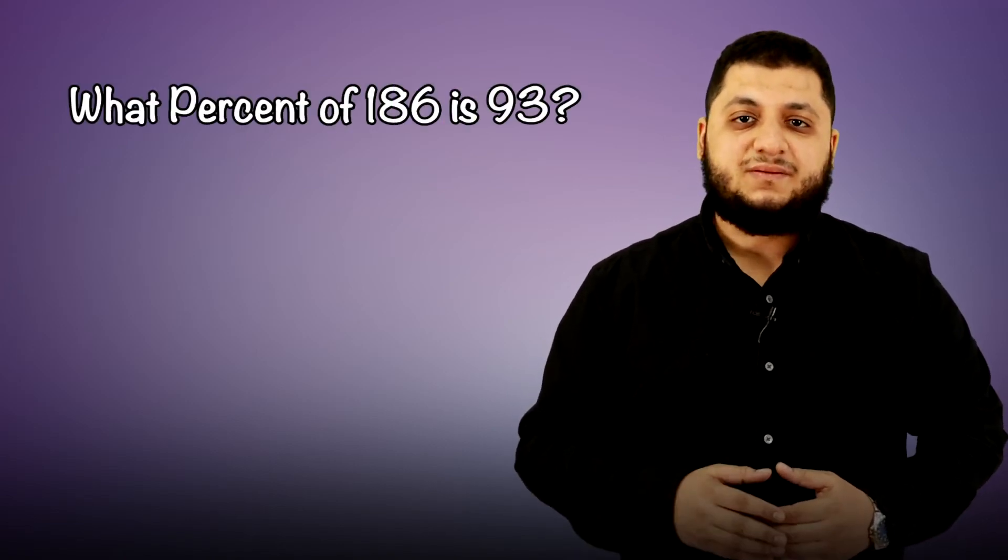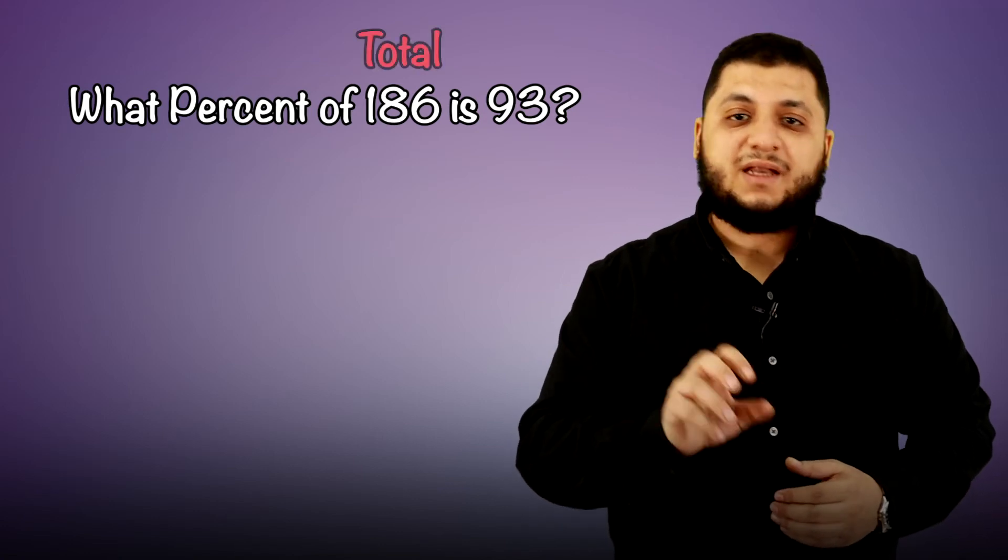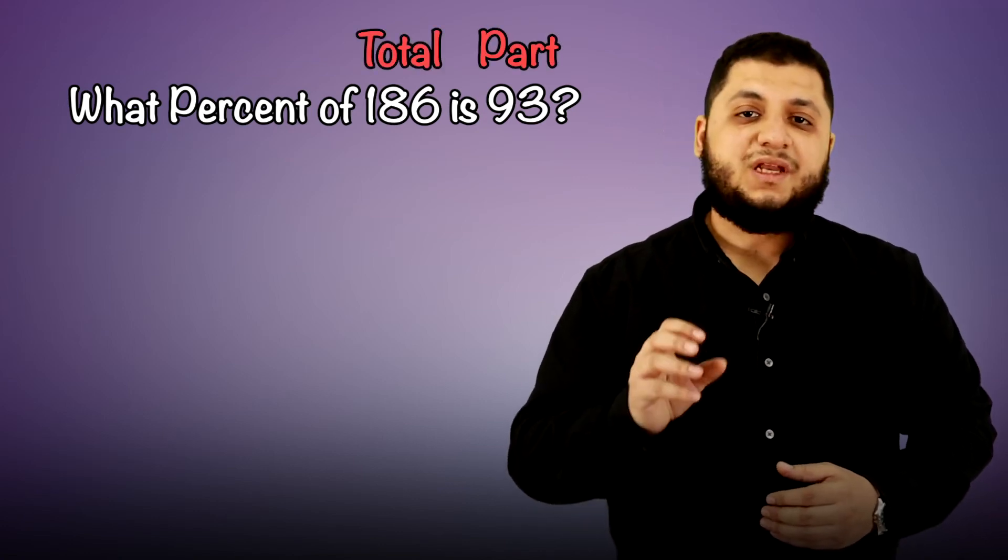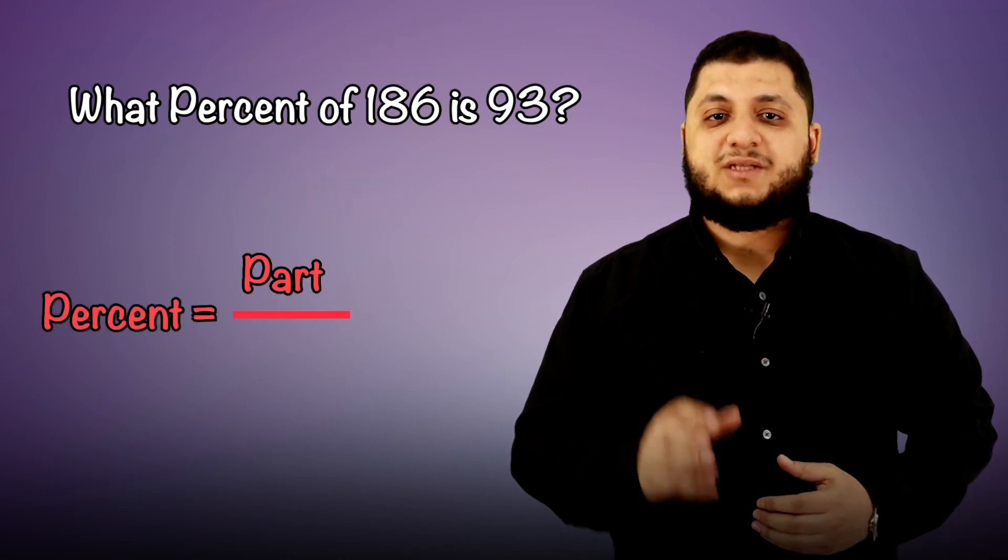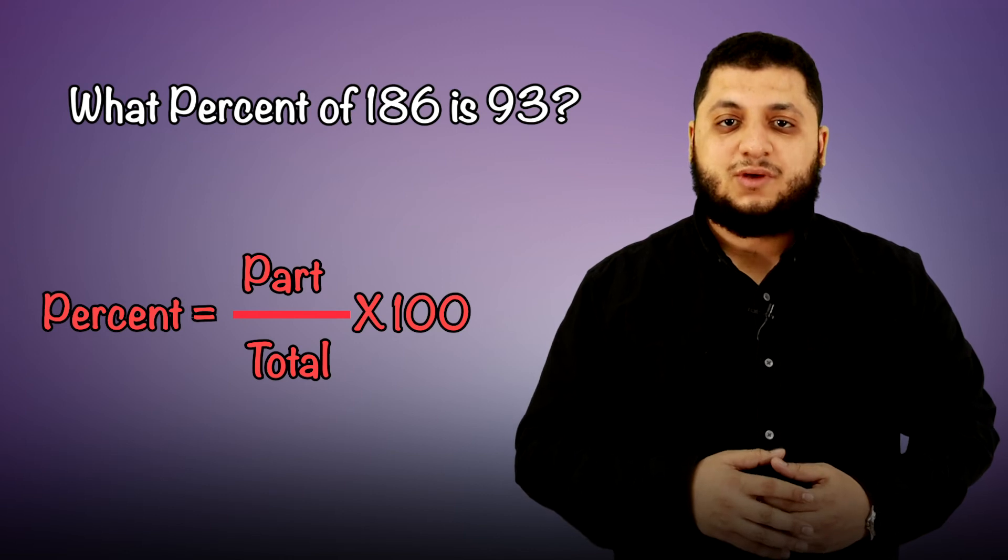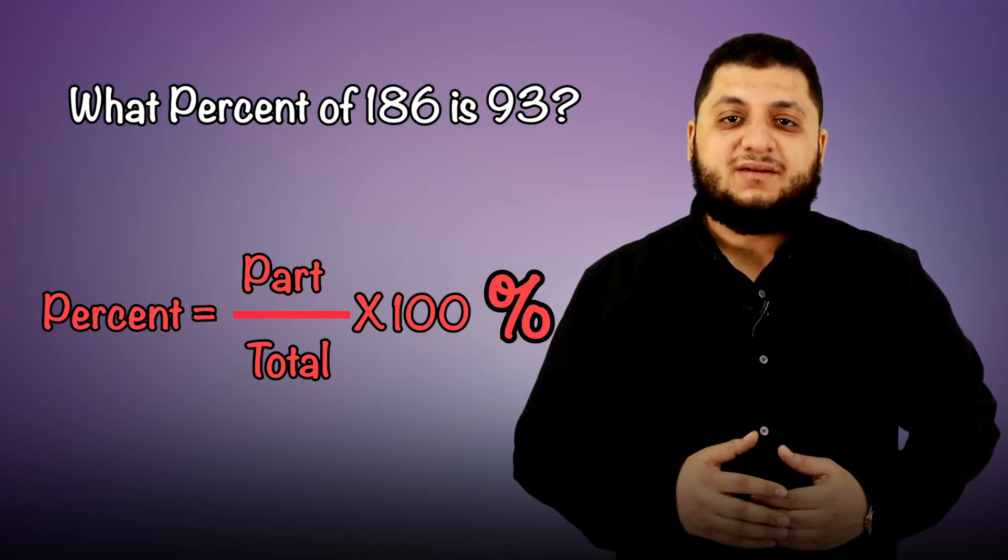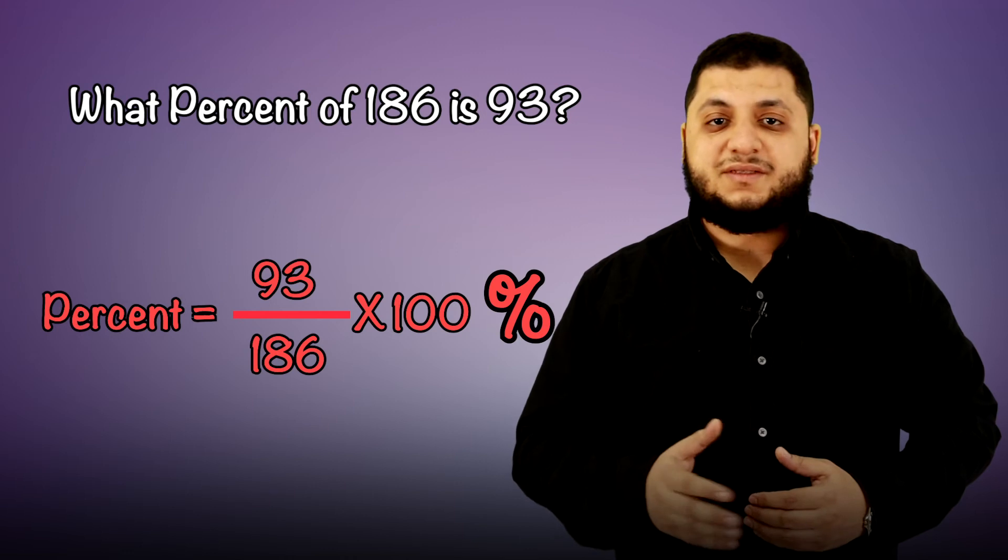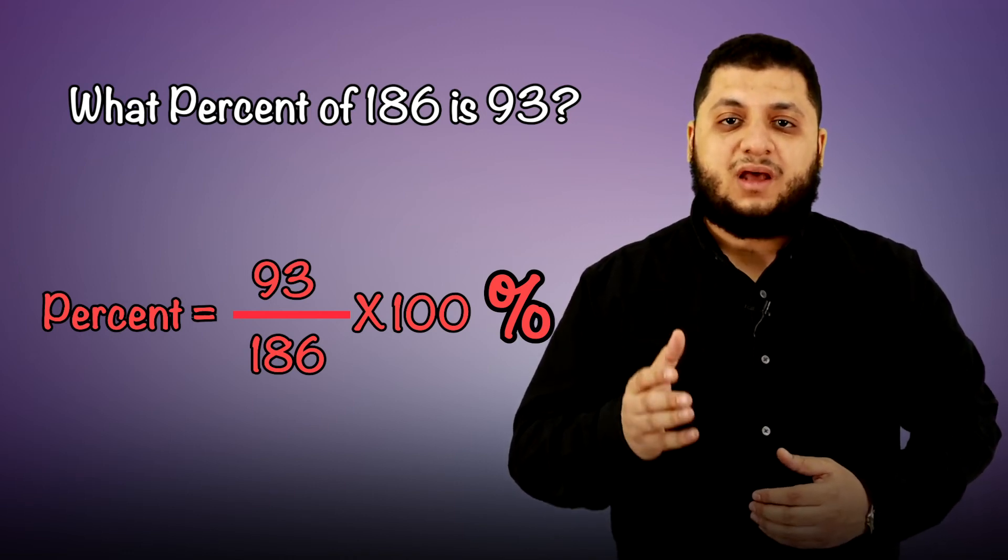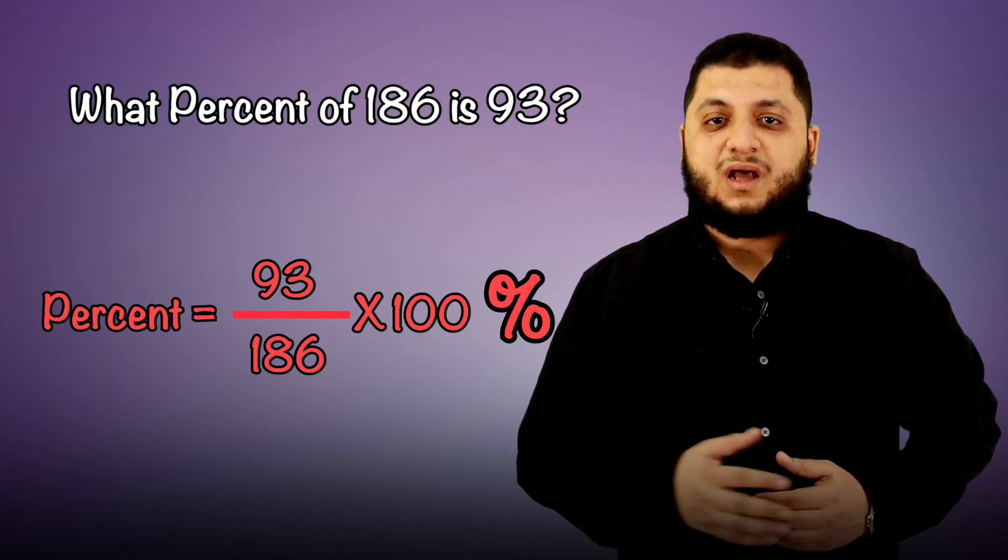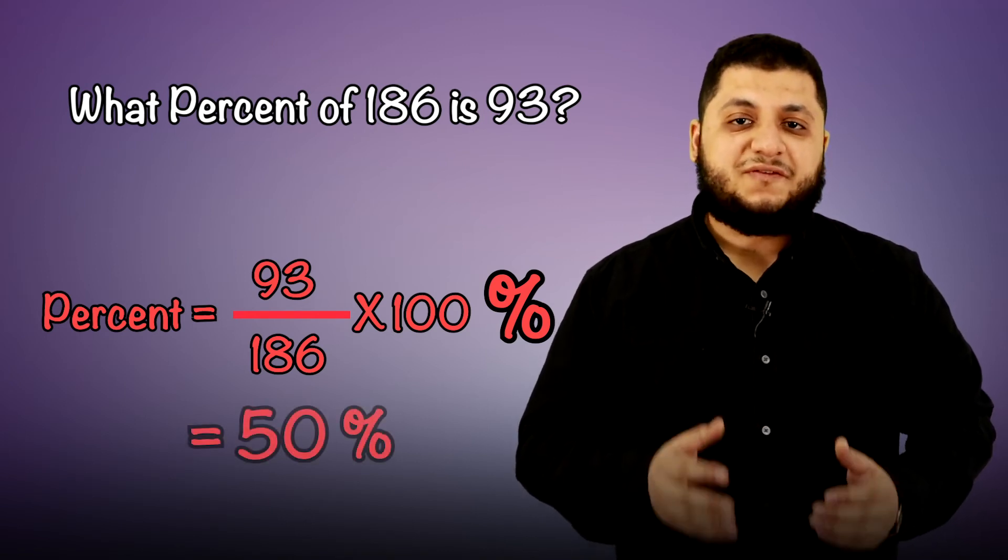Second type asks about percent. Example: what percent of 186 is 93? 186 is the total and 93 is a part, and here we need to calculate the percent. To calculate the percent, we use the formula: part divided by total multiplied by 100. So divide 93 by 186, then multiply by 100. 93 divided by 186 is 0.5 times 100 equals 50, so it's 50 percent.